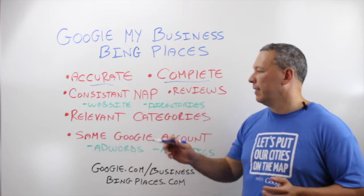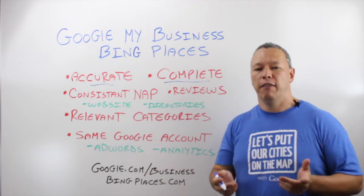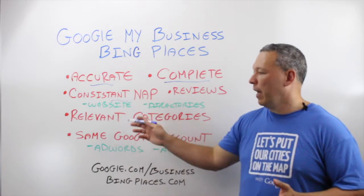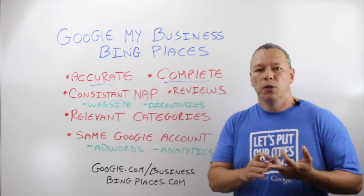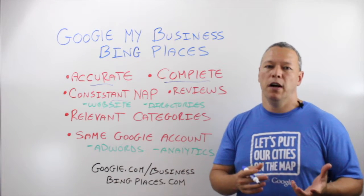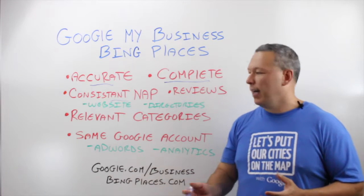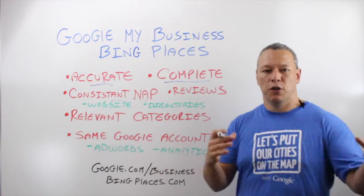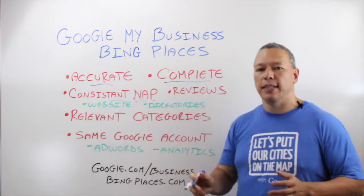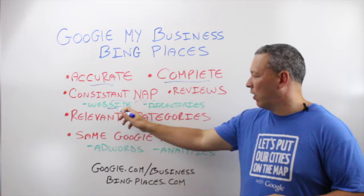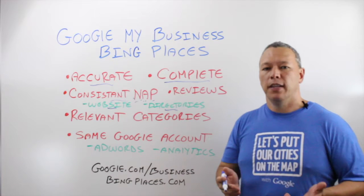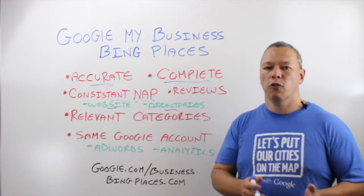The next thing is to make sure you have a consistent NAP — your Name, Address, and Phone number. These are unique identifiers for search engines. They'll match your NAP across the web, from directories to your website, to determine your business's credibility. Make sure your NAP is consistent inside your Google My Business page, on your website, and on any other directories or customer review sites you're on, like Yelp, Foursquare, Angie's List, and similar sites.